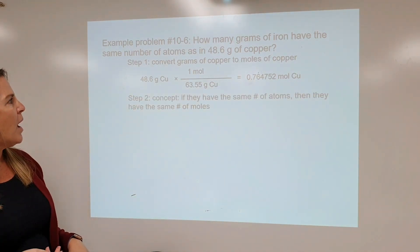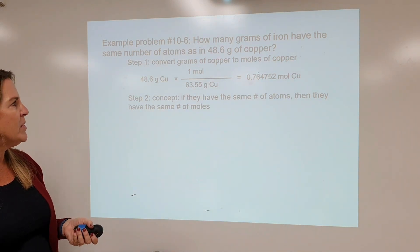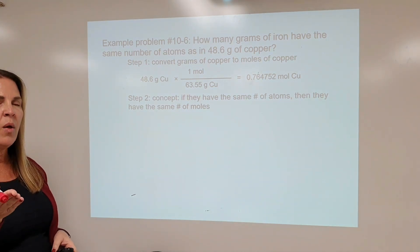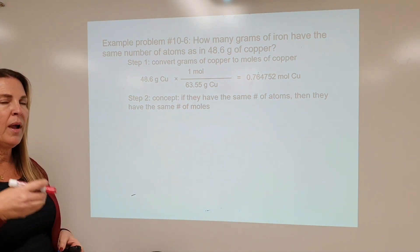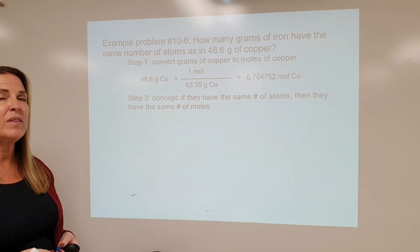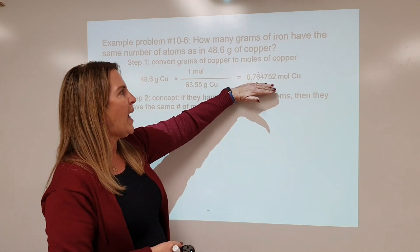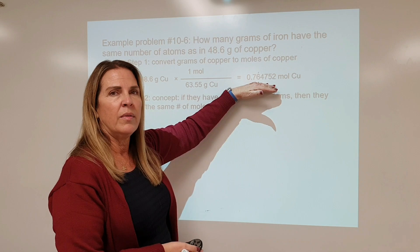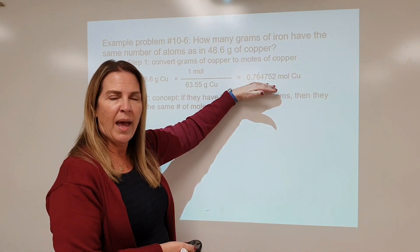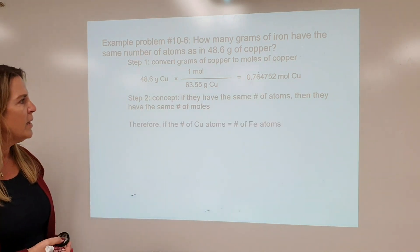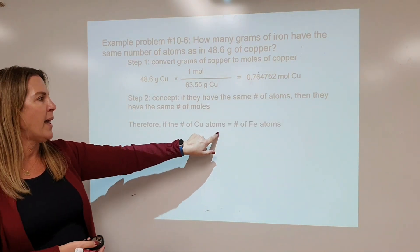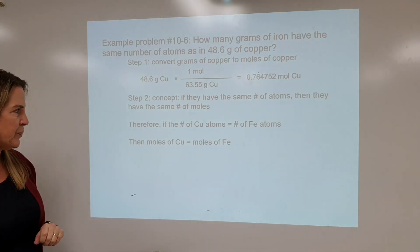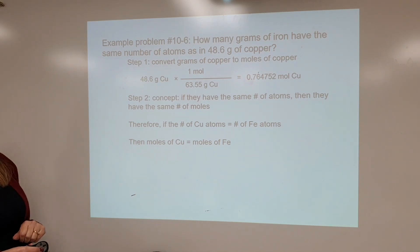Step two — concept: if they have the same number of atoms, then they have the same number of moles. One mole of copper and one mole of iron have the same number of atoms. So if I have 0.764752 moles of copper, how many moles of iron would have the same number of atoms? Therefore, if the number of copper atoms equals the number of iron atoms, then the moles of copper equals the moles of iron.